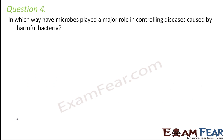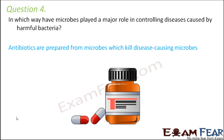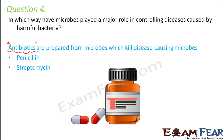Question number 4: In which way have microbes played a major role in controlling diseases caused by harmful bacteria? One major contribution of microbes is the preparation of antibiotics — medicines which can treat bacterial infectious diseases. These antibiotics are prepared with the help of microbes. The first antibiotic discovered was penicillin by Alexander Fleming; other popular examples include streptomycin and tetracycline.